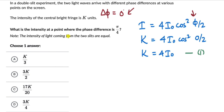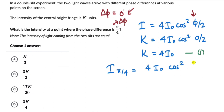Now we need to figure out the intensity at a point where the phase difference is π/4. So δφ = π/4. Plugging that into the relation, the intensity at that point equals 4i₀ · cos²(π/4 ÷ 2) = 4i₀ · cos²(π/8). In place of i₀, we substitute k/4 from our first equation, giving us 4 · (k/4) · cos²(π/8) = k · cos²(π/8).